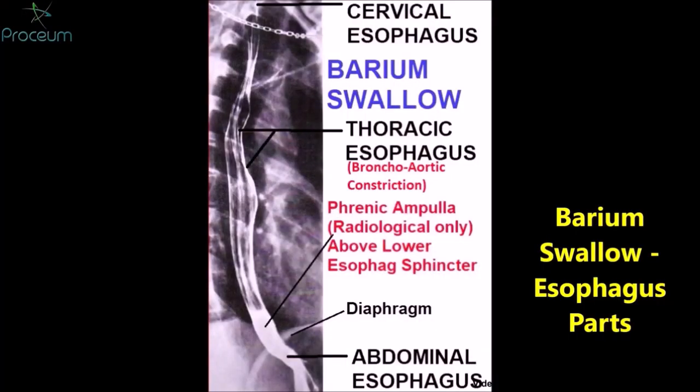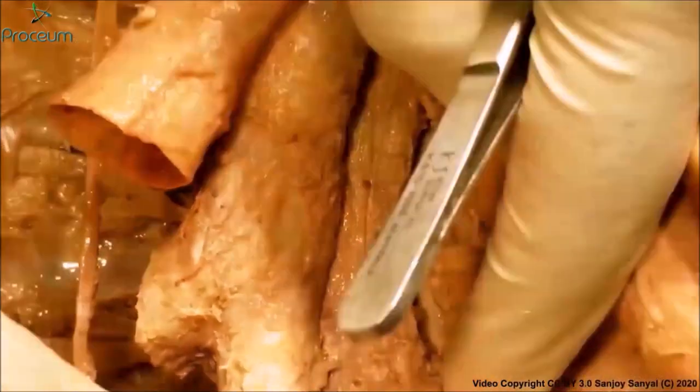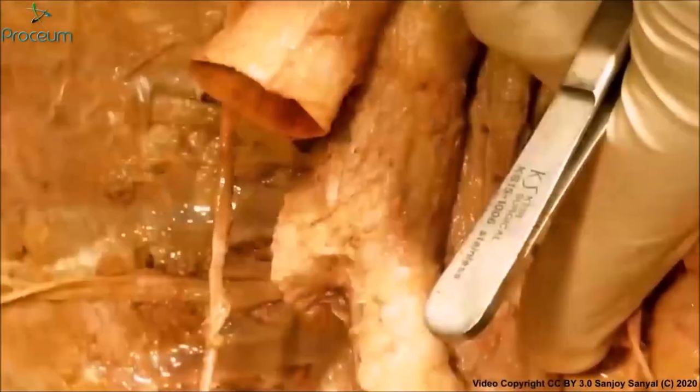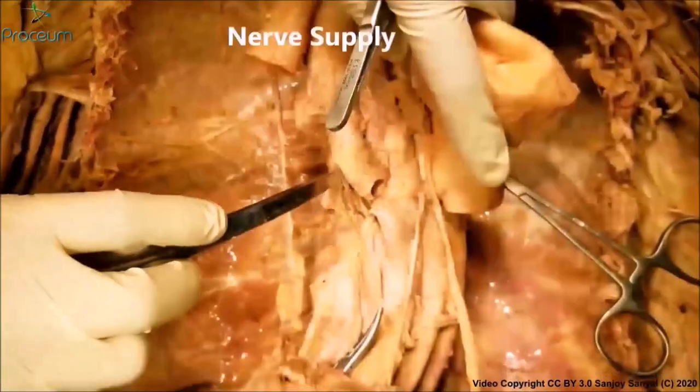The lateral compression is best seen in an anteroposterior barium swallow, and the anterior compression is best seen in a lateral barium swallow. This is a barium swallow to show the constrictions of the esophagus and the three parts of the esophagus — these are the constrictions with their respective clinical implications.